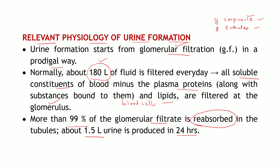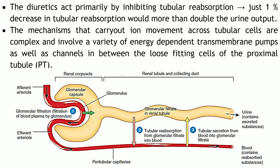Why is filtration called a wasteful process? Because more than 99 percent of the filtrate is reabsorbed back into the tubules. Remember this simplified figure of the nephron — this is a representative picture to show the parts and different processes taking place. Glomerular filtration takes place at the renal corpuscle, and from here due to blood pressure, whatever is soluble in the blood along with blood plasma gets filtered into the capsular space and then passes into the tubules.